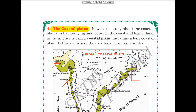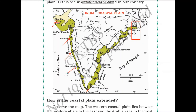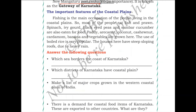Next on the western coast we have Mumbai, Goa, Mangaluru, and Kochi. The other ports on the eastern coastal plain are left for you to find on the map of India. New Mangaluru port ranks ninth in importance and is known as the gateway of Karnataka.